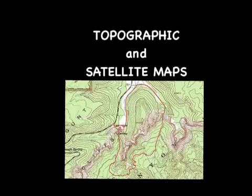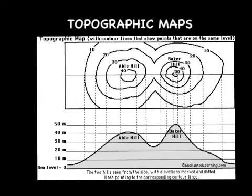Today we're going to talk about topographic maps and satellite maps. Topographic maps are two-dimensional maps with three-dimensional representation. Topographic maps indicate areas of elevation, the height above sea level.